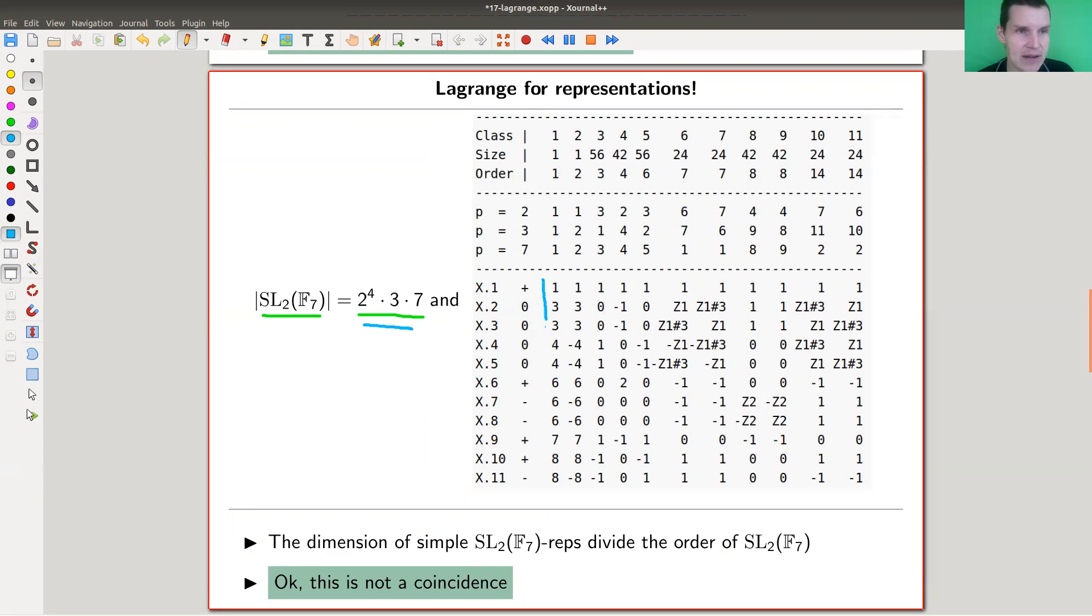This is SL2 over the field with seven elements. So if you would like to do the calculation, you will realize it's not so trivial. It's this order. You can also ask Magma if you want. So just ask for the order of the group. This is the number we're looking at. And you look at the character table, and again, here are the dimensions of the simple representations.